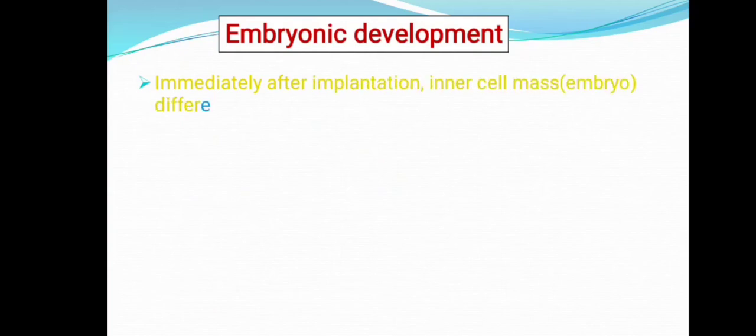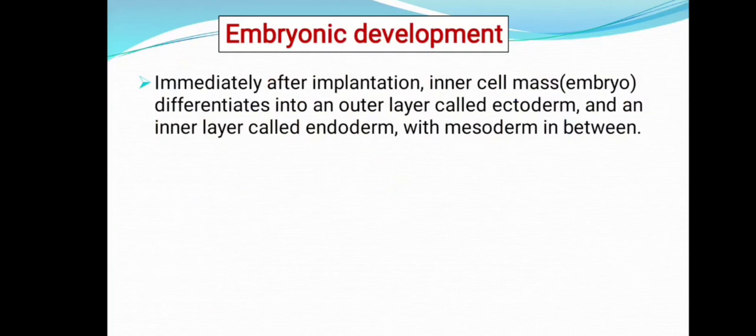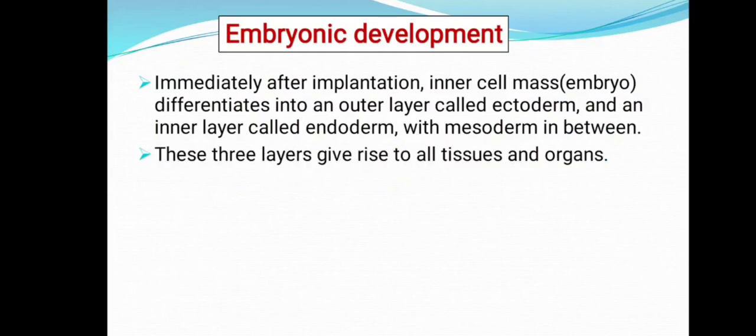Regarding embryonic development: immediately after implantation, the inner cell mass — which is going to develop into the embryo — differentiates into an outer layer called ectoderm and an inner layer called endoderm, with mesoderm present in between. These three layers give rise to all tissues and organs, so they are called germ layers.